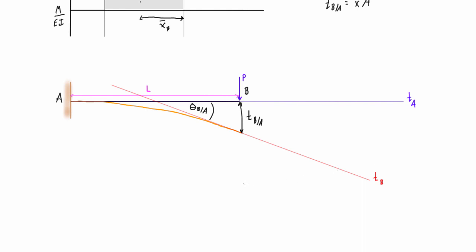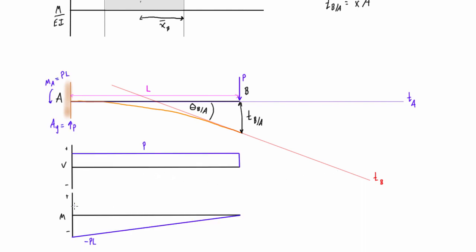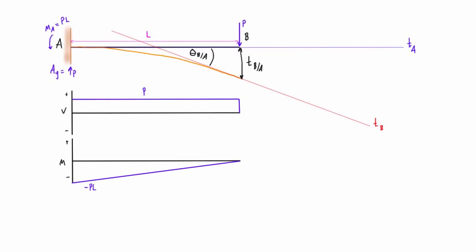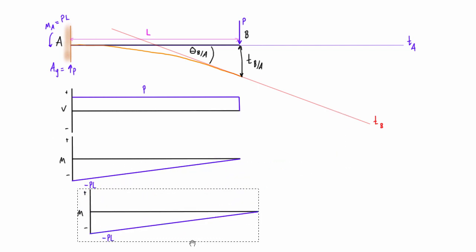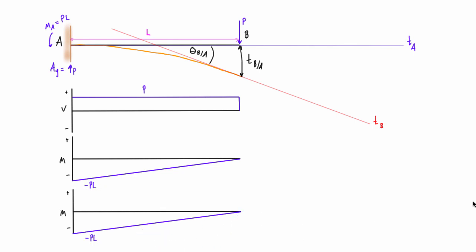To proceed, we need to draw the bending moment diagram. Drawing the shear force diagram first can help, but ultimately we just need the bending moment diagram. The next step is to get the M over EI diagram: take the bending moment diagram, draw it again below, and label it M over EI. Whatever values you have, just divide them by EI — that's all you do to go from a bending moment diagram to an M over EI diagram.